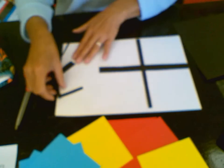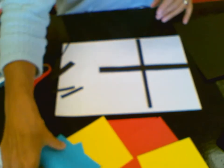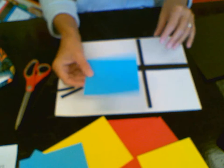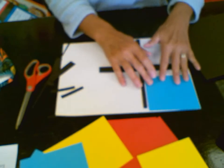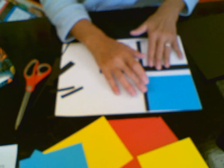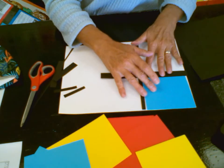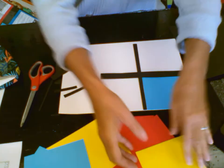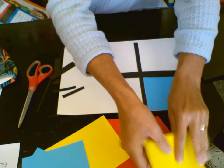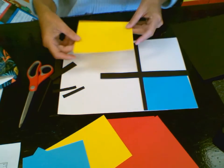So if I start out first with maybe my blue square up here in the corner and I place my strips around it, I'm then going to decide where I would like to maybe put a yellow rectangle.